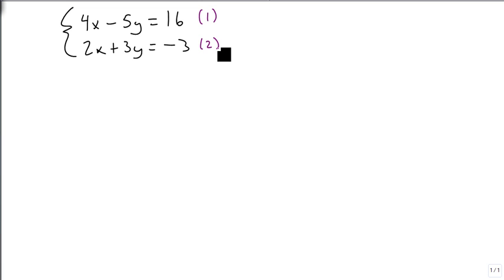I want to find a variable that when I add them together, they go away. They add to 0. I'm going to look for commonalities on my x's and on my y's, and I'm going to notice that this x right here is only half of this one. So if I take equation 2 and I multiply it by a negative 2, I'm going to get minus 4x minus 6y equals positive 6.